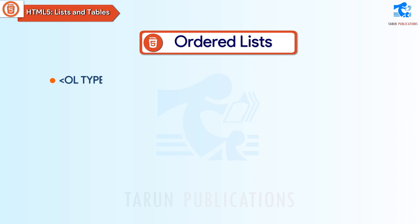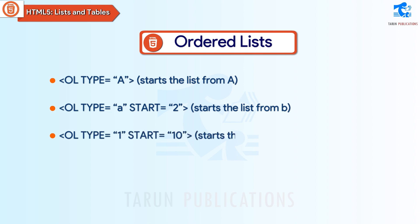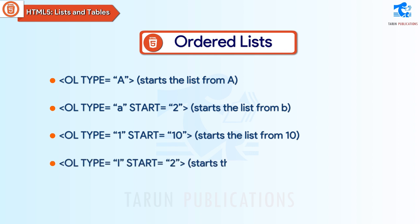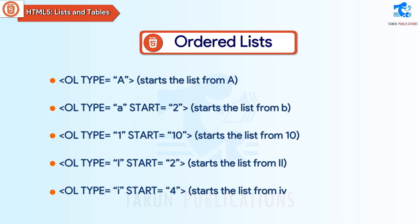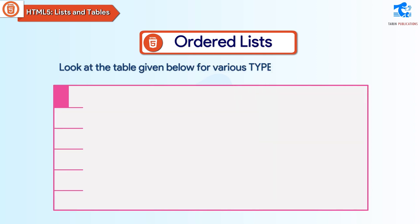The ol tag attributes are type and start, which can be used in the following ways: ol type='A' starts the list from A. ol type='A' start='2' starts the list from B. ol type='1' start='10' starts the list from 10. ol type='I' start='2' starts the list from II. ol type='i' start='4' starts the list from iv. Look at the table given below for various type attributes.